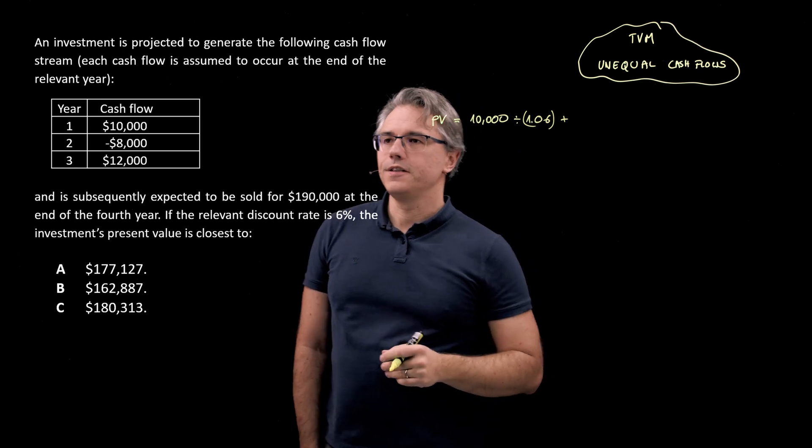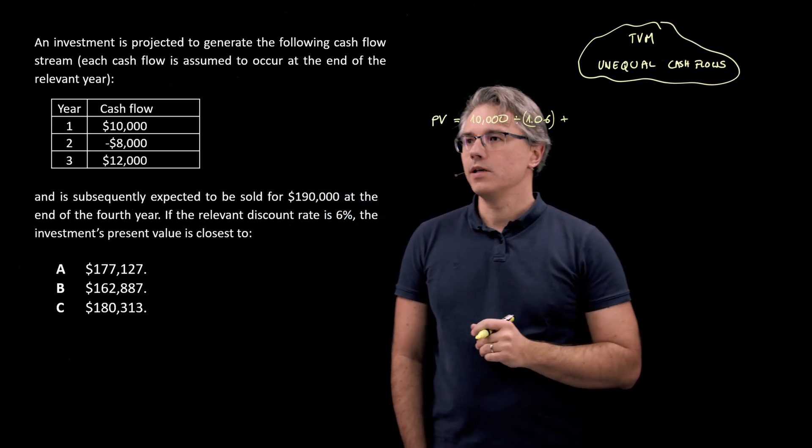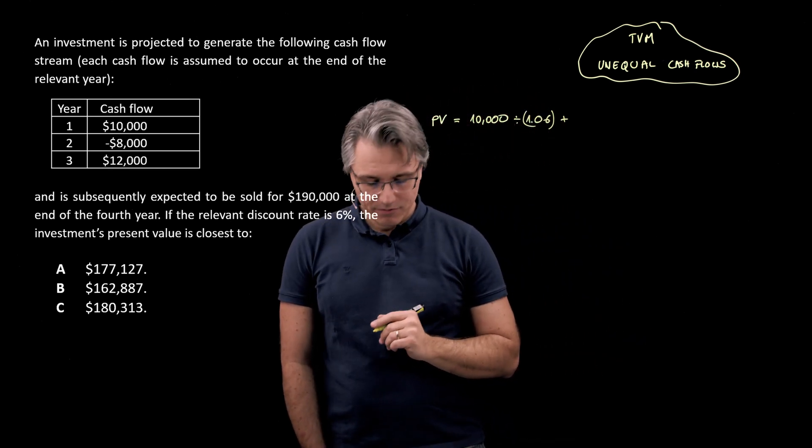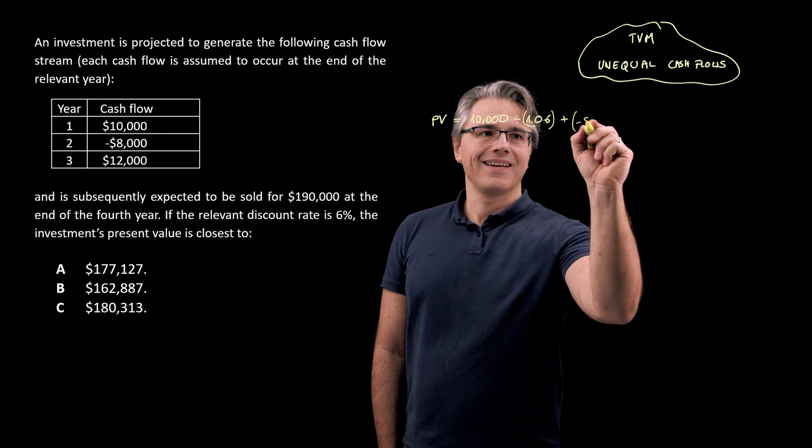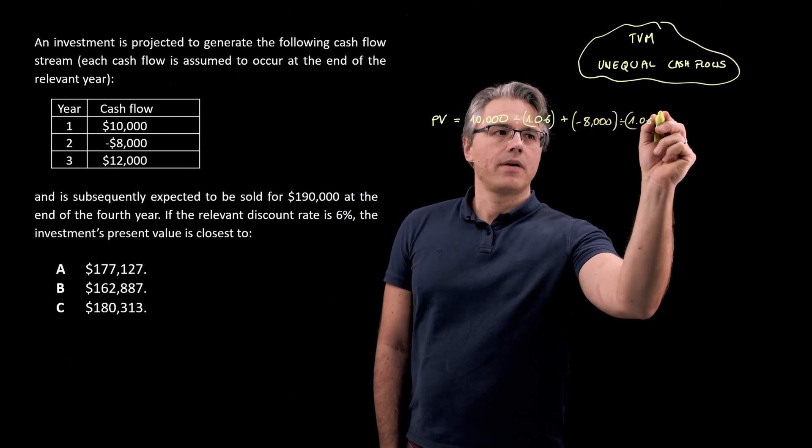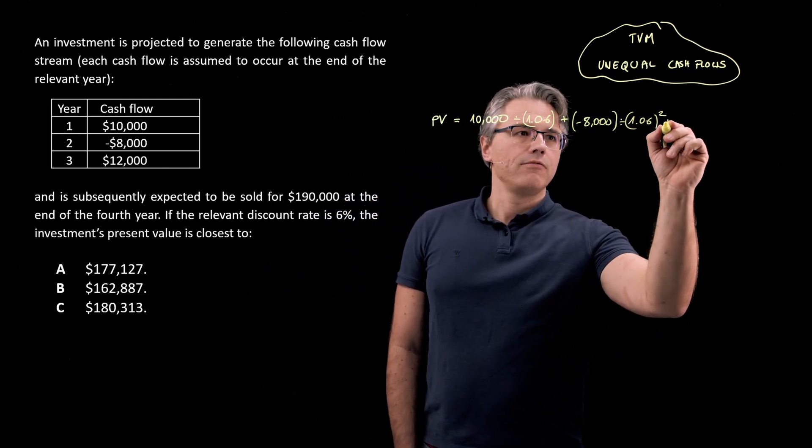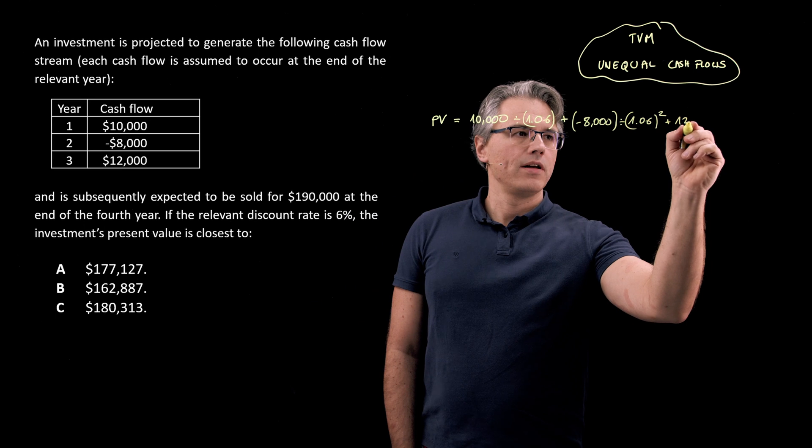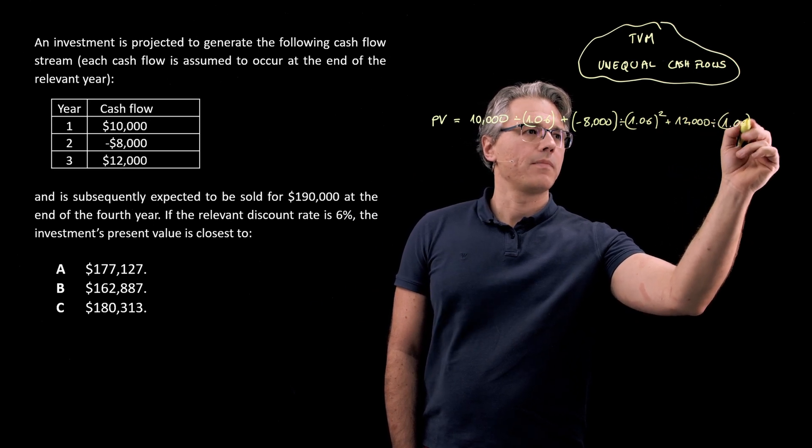I don't necessarily need the bracket, to be honest. I'm just using it to make things a little bit neater. Now, the second one is a negative cash flow. So -8,000, but divided by 1.06 to the power of 2, seeing as it is two years away from today. Now, the third one is positive. So 12,000 divided by 1.06 to the power of 3.